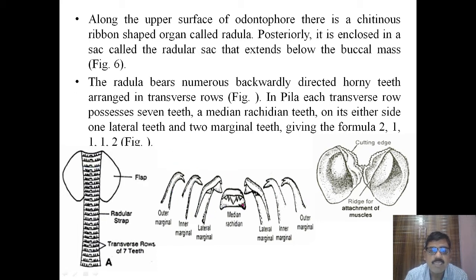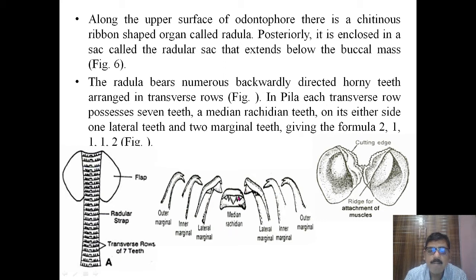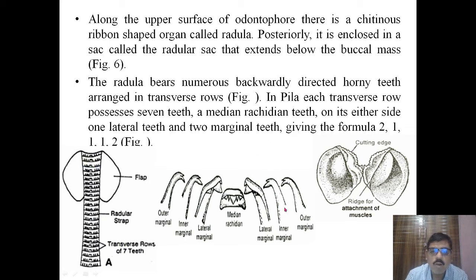The radula bears numerous backwardly directed horny teeth arranged in transverse rows. In Pila, each transverse row possesses seven teeth. At the centre is a median rachidian tooth. On either side are lateral teeth, then inner marginal and outer marginal teeth, giving the formula 2:1:1:1:2.